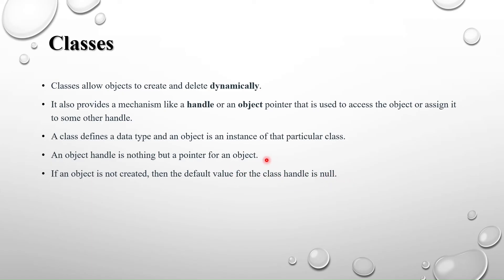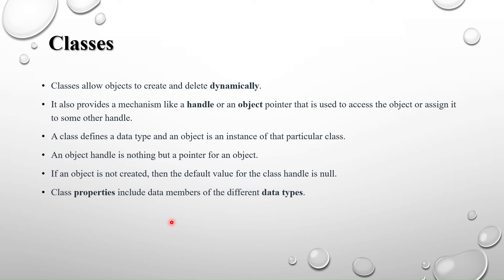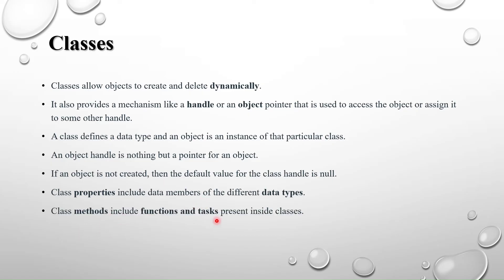The class properties include data members of different data types. We use specific terminology: instead of calling them data types or variables, we call them properties. So address, data, id — all variables inside the class are called properties. For functions and tasks, we use the term methods. Variables are called properties; functions and tasks are called methods.